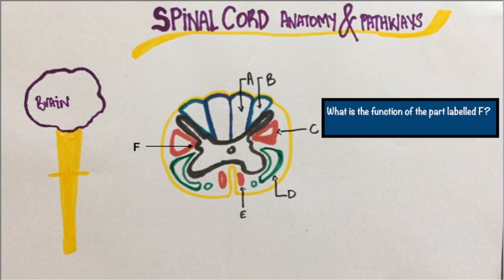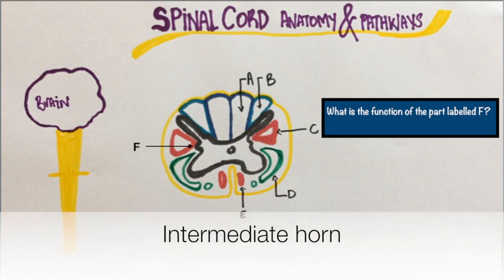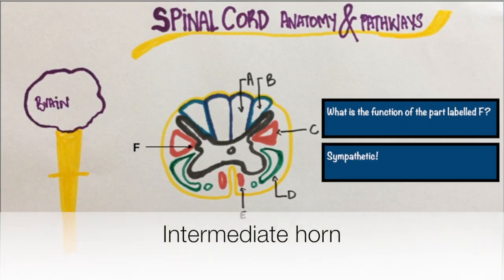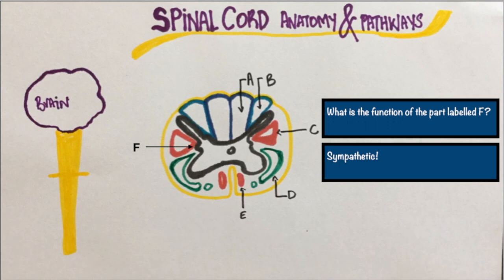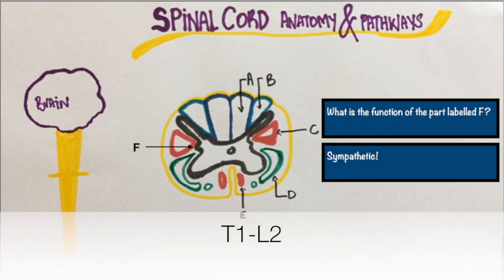Question 4: What is the function of the part labeled F? The part F is the intermediate horn. It is an important part of the sympathetic nervous system. It begins at T1 and extends all the way to L2.